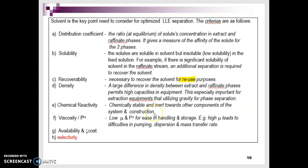Next, the solvent must be chemically stable and inert to other components; otherwise, a chemical reaction may occur. Next is low viscosity and vapor pressure, which is important for handling and storage. For example, high viscosity leads to difficulties during pumping, dispersion, and mass transfer rates. There are many more criteria that you can provide regarding why solvent selection criteria must be set in order to choose which solvent is suitable for each process.